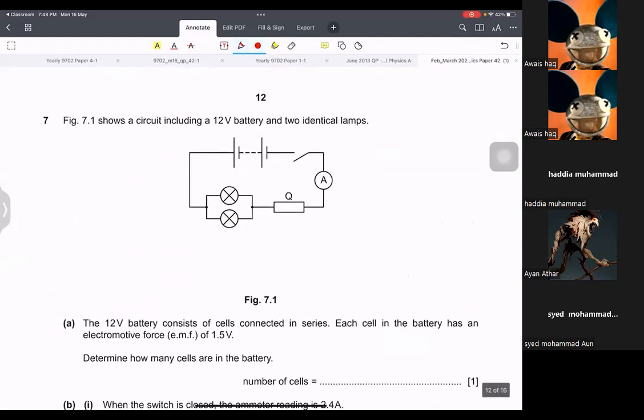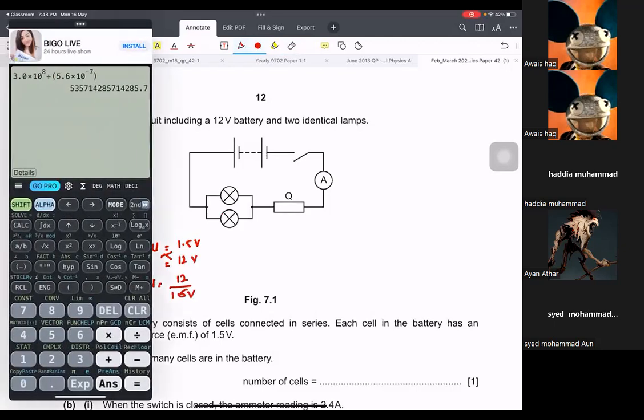Show the circuit including 12 volts battery and two identical lamps. 12 volts battery consists of cells connected in series. Each cell in the battery has electromotive force of 1.5. Determine how many cells are there. So basically when it's in series, you can add 1.5. So if one cell is equal to 1.5 volts, how many cells are going to be in 12 volts? So you cross multiply. So number of cells will be 12 divided by 1.5, which is 8 cells.